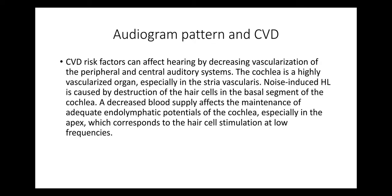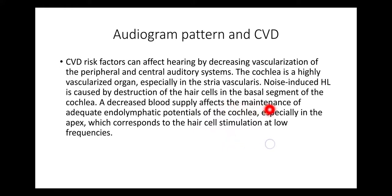Heart disease and audiometric patterns. Cardiovascular disease risk factors can affect hearing by decreasing vascularization of the peripheral and central auditory system. Cardiovascular disease causes vascular compromise, and if the tiny vessels in the heart can be compromised, the vascular supply of the inner ear could be compromised similarly. The cochlea is a highly vascularized organ, specifically in the stria vascularis. Noise-induced hearing loss is caused by destruction of hair cells in the basal segment of the cochlea, whereas decreased blood supply affects the maintenance of adequate endolymphatic potentials, specifically in the apex, corresponding to hair stimulation at low frequencies. Therefore, patients with cardiovascular disease will have a low frequency loss.